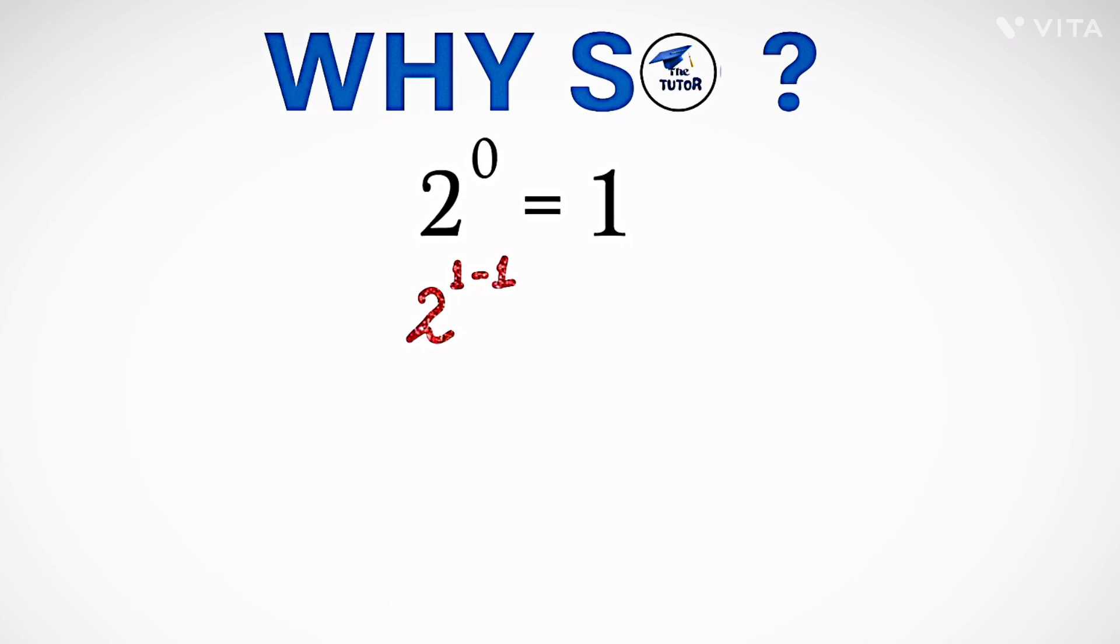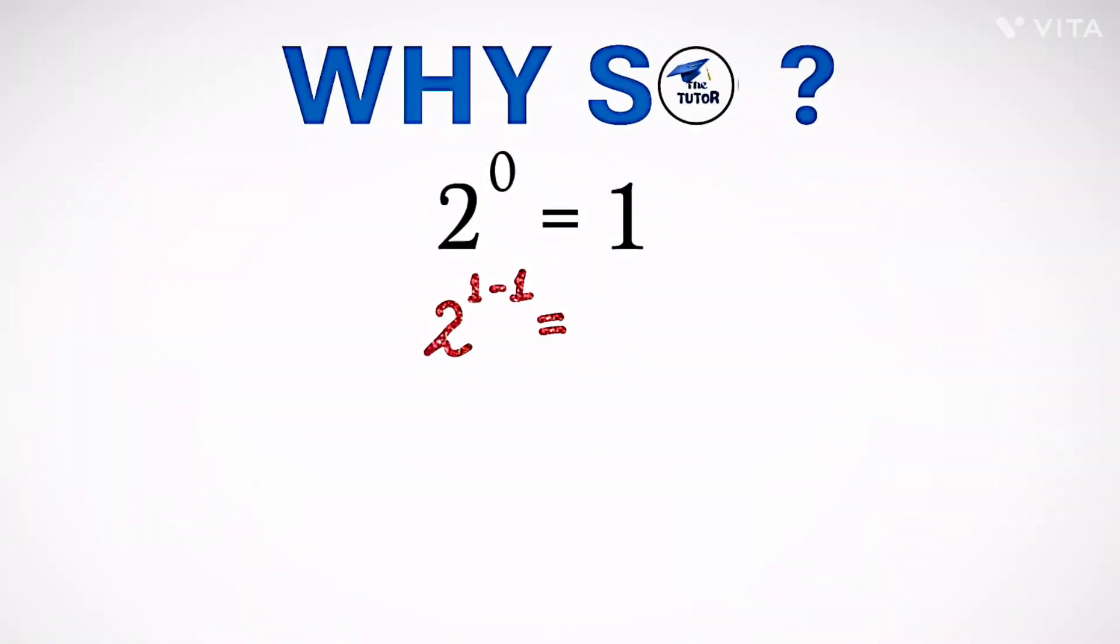And you know, with two different exponents, what we do is we can multiply them with the individual exponents: 2 with exponent 1 and 2 with exponent negative 1.